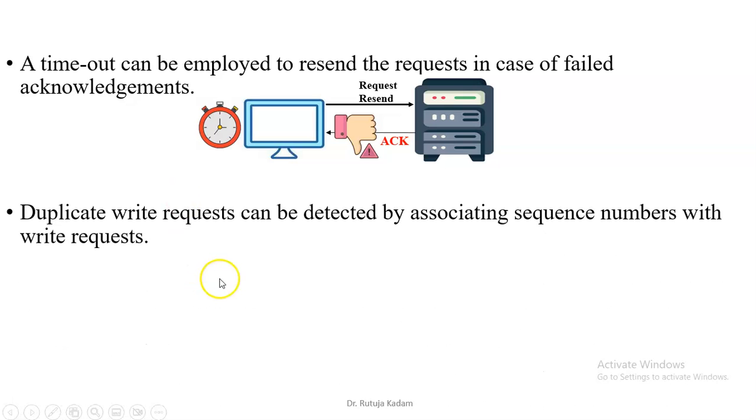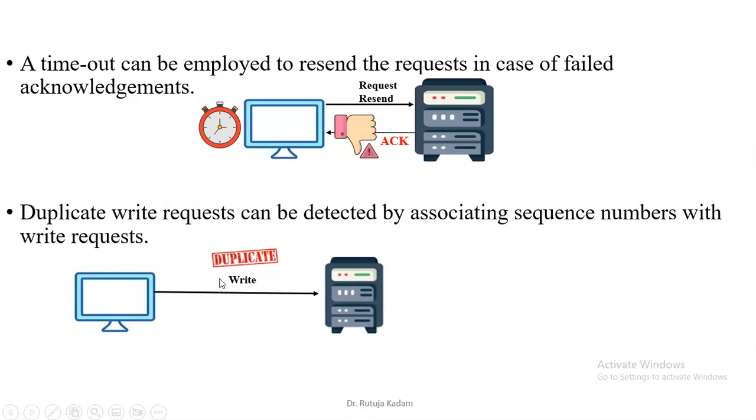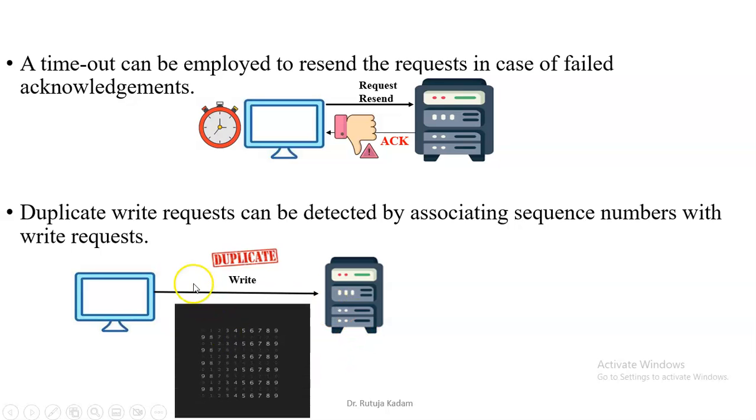Duplicate write requests can be detected by associating sequence numbers with the write requests. So if the write requests are duplicate, we can detect them by associating sequence numbers to these requests.